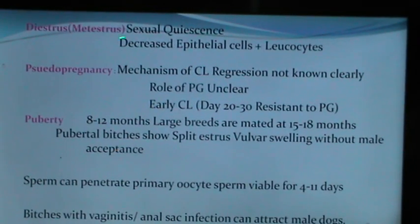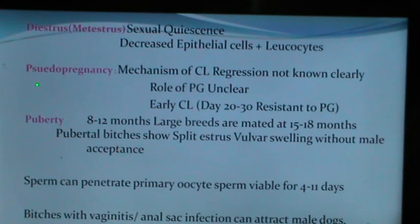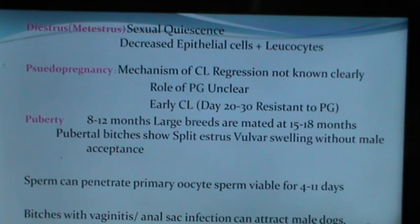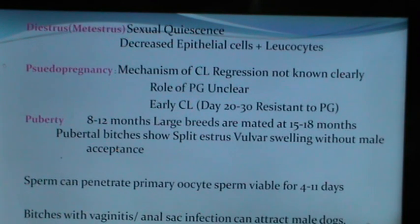Then there is a period of diestrus or sexual quiescence. Some bitches experience pseudopregnancy, a mechanism whereby the CL persists and on completion of a period equal to the gestation period, the bitch shows signs as if she were pregnant. Pseudopregnancy is thought to be related to the role of prolactin. The mechanism of CL regression is not clearly known in the bitch, and the role of prostaglandins in CL regression is unclear. Early CL, day 20 to 30, is resistant to prostaglandins.